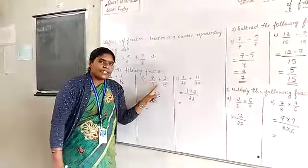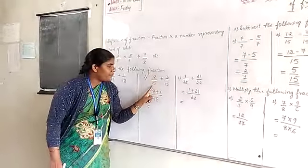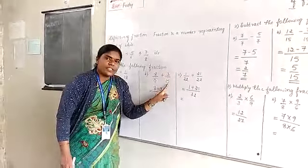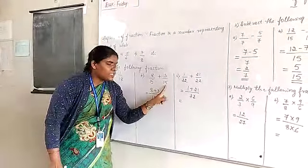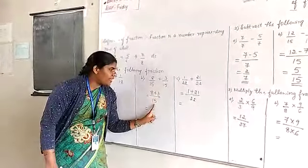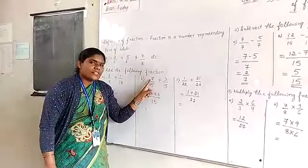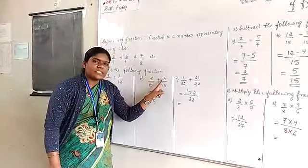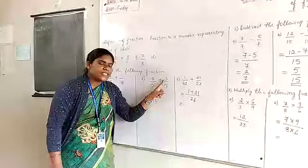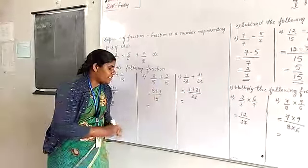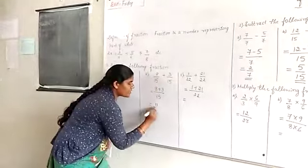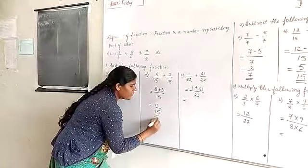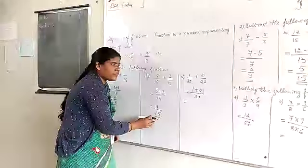Similar method, another example: 8 by 15 plus 3 by 15. Here also denominator value how much is there? Here also 15, here also 15. 15 as is you write. Numerator how much in first term? 8 is added to second term numerator, 3. 8 plus 3 is how much? 11 divided by denominator value 15 as is you write. This is the answer: 11 by 15.